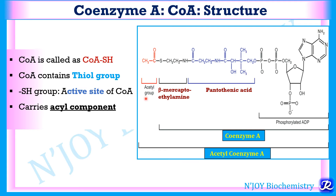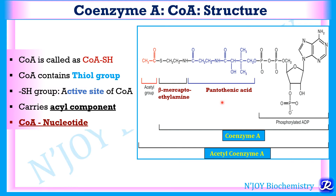The acetyl group is linked to the sulfhydryl group of beta-mercaptoethylamine, and coenzyme A consists of a nucleotide. So the structure of coenzyme A consists of beta-mercaptoethylamine, pantothenic acid, and phosphorylated ADP.